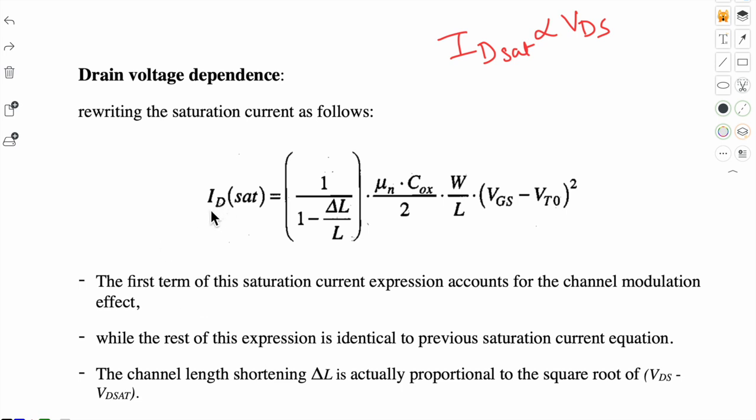Now let's see the detailed analysis. So this equation, which we had for drain current in saturation region, we can modify using L' equals L minus delta L. So 1 upon 1 minus delta L by L. So this is our equation 3.